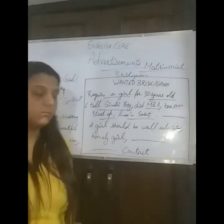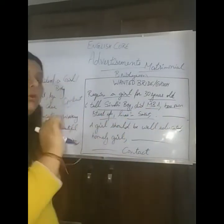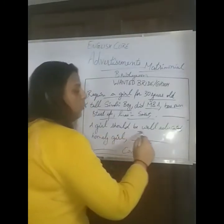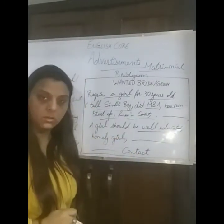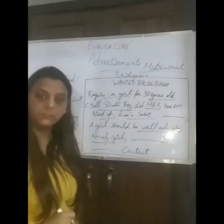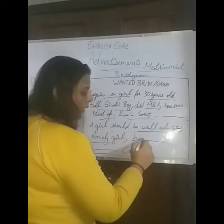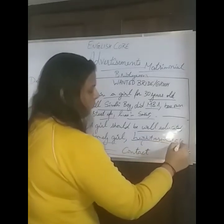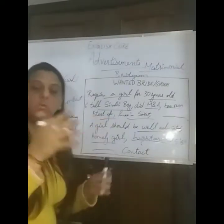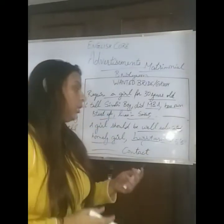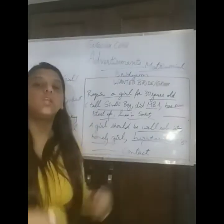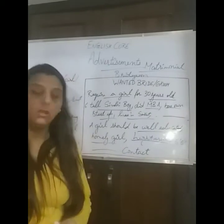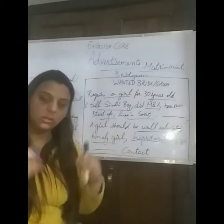Then after a full stop, you give the details about what kind of girl you require. For example: 'The girl should be well-educated, homely, height around five feet five.' You mention the details of the girl — working or non-working, inter-caste marriages allowed, dowry not acceptable — whatever applies. Then full stop, followed by contact details. In the same manner you need to write the ad.